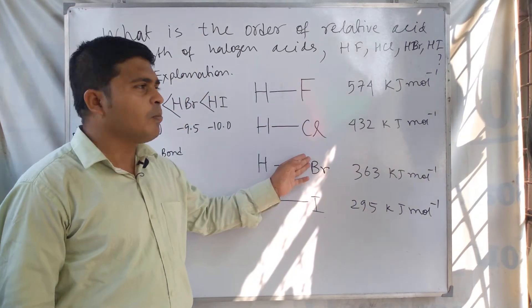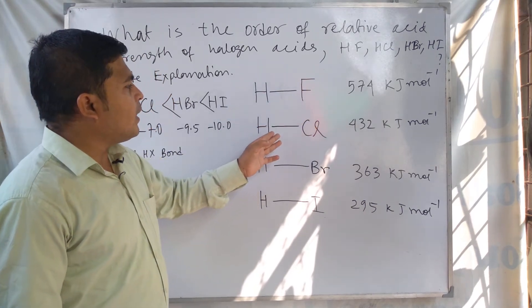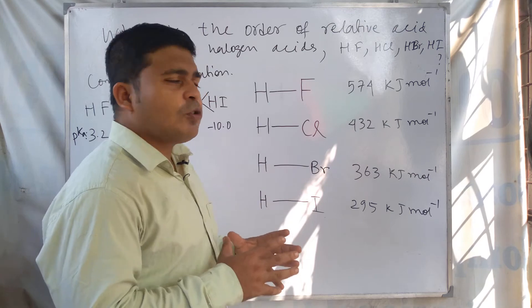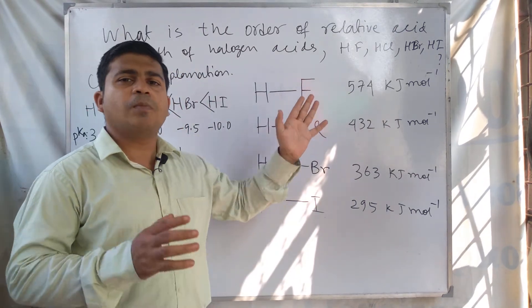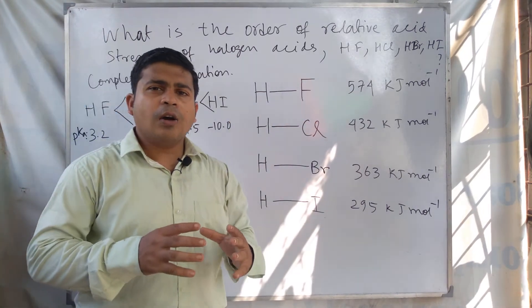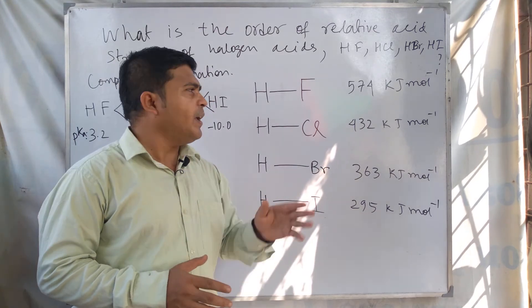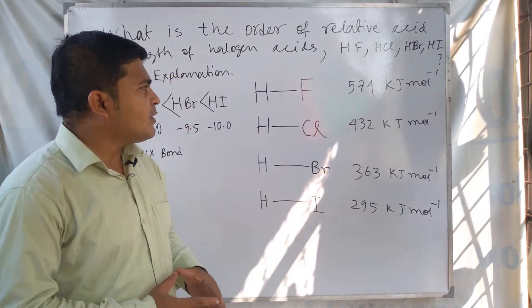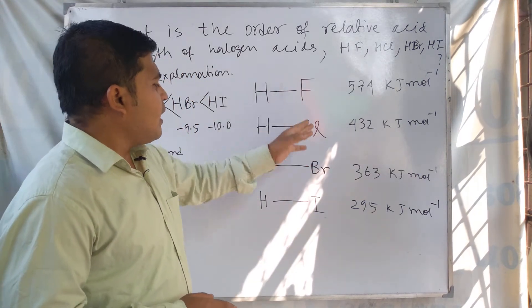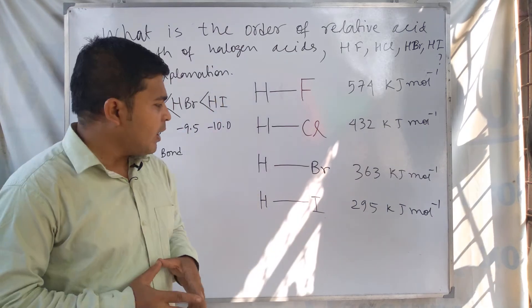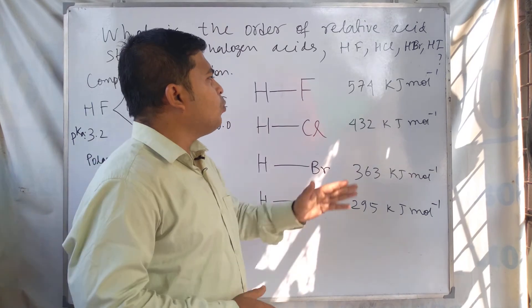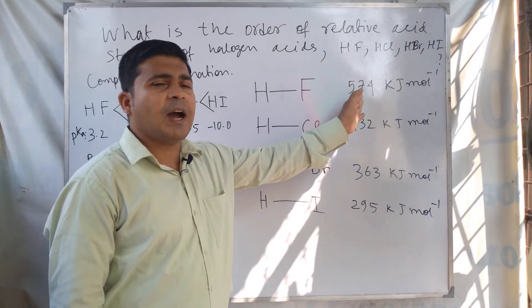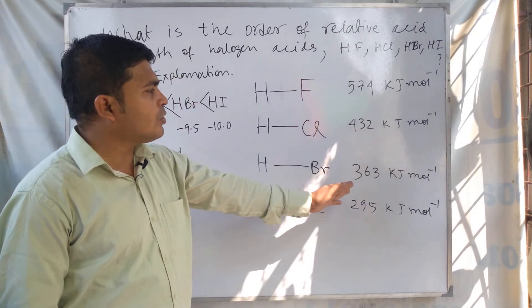If we talk about the polarity of these covalent bonds, HF is the most polar compound, then HCl, then HBr, then HI. From polarity values, one may expect HF to be the most acidic compound among these four acids. But actually HI is the most acidic compound. For the explanation we have to consider the bond dissociation energy. The bond dissociation energy for HF is 574 kJ/mol and for HCl is 432 kJ/mol.